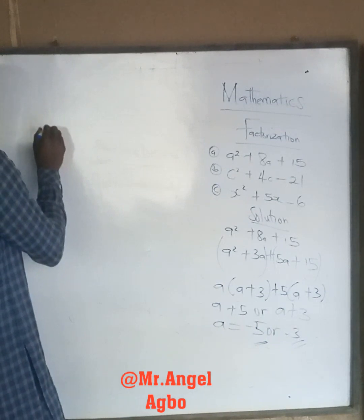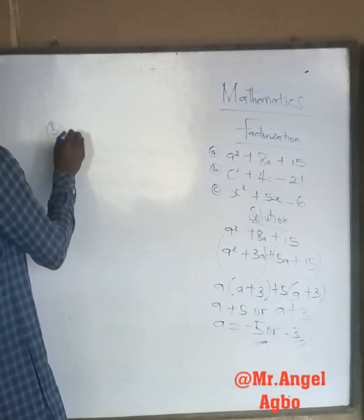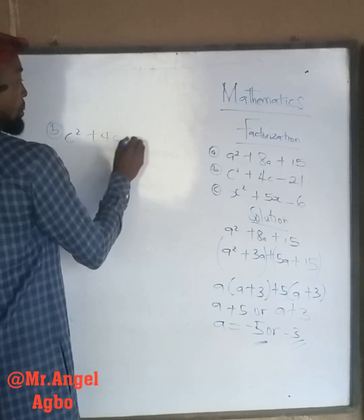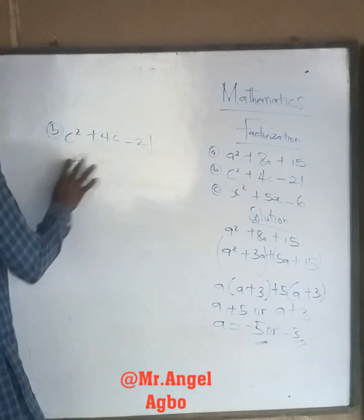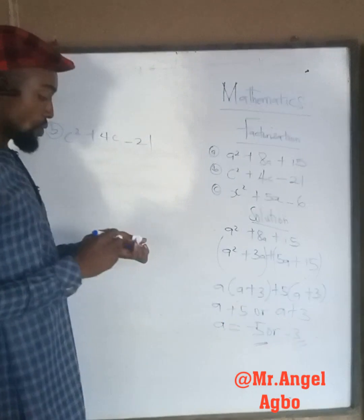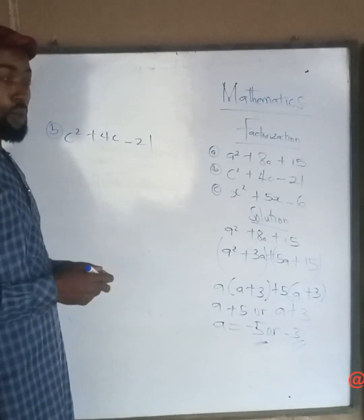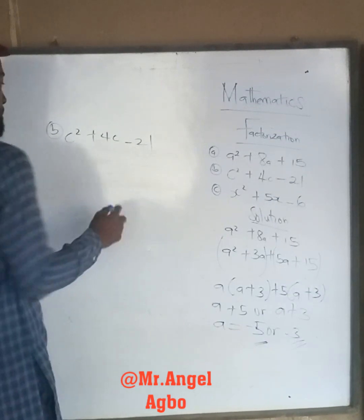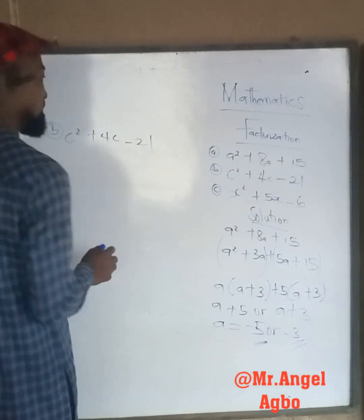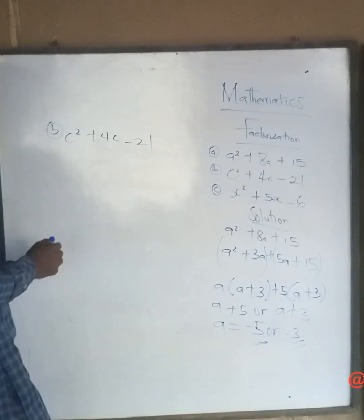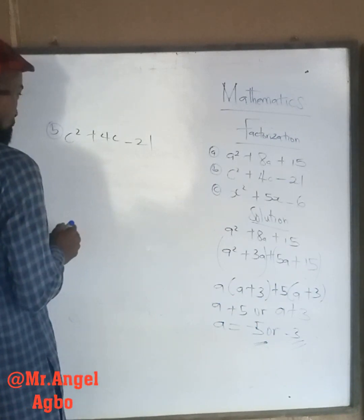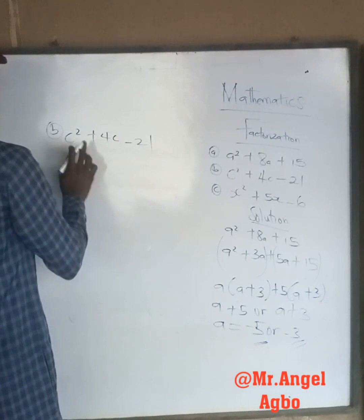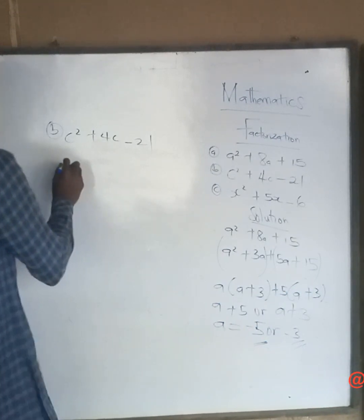What are the two numbers when you multiply them to give you negative 21, and when you add them to give you positive 4? I can see that 3 and 7 will do that, because 3 times 7 will give you 21, and 7 minus 3 will give you 4.